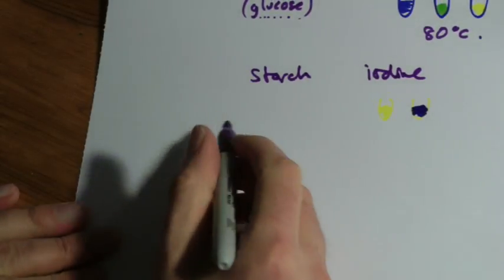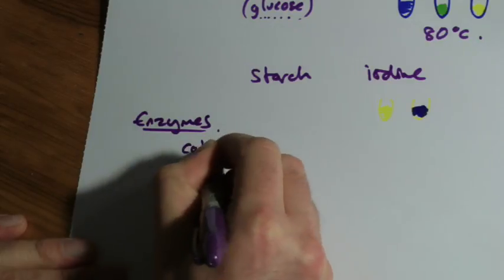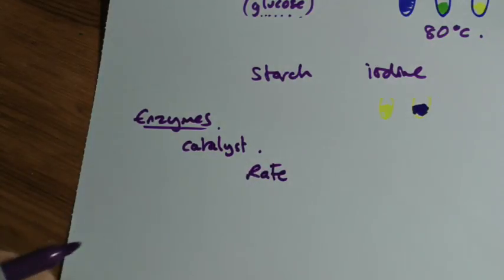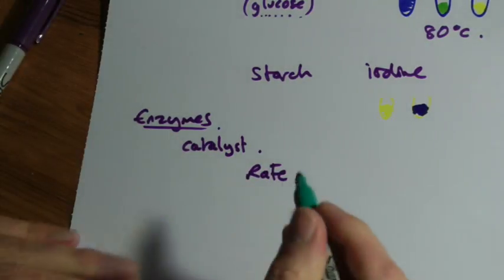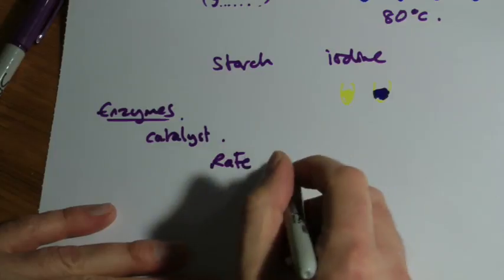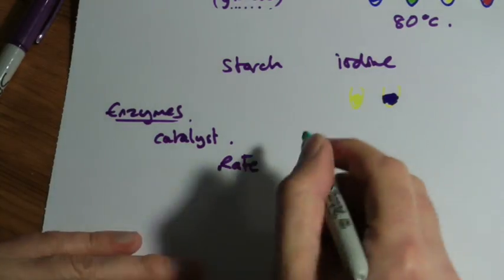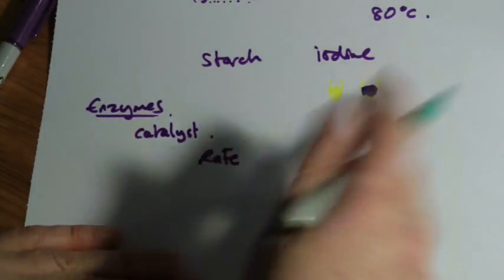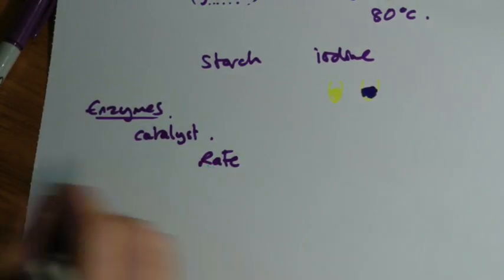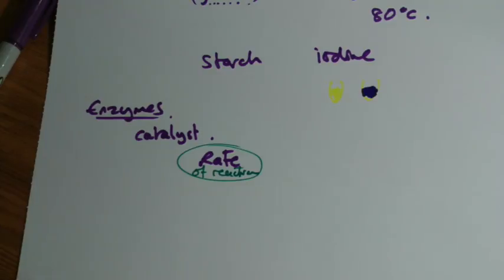On to the trickier bit, which is enzymes. So enzymes are these biological catalysts. Catalyst is something that speeds up the rate of a reaction. Rate is a quite tricky term to get your head around. Rate is how often something happens per unit of time. For example, how many times per second does a reaction happen? And what a catalyst does is it increases the rate of reaction. So there are more reactions every second, or more reactions per minute, or more reactions per hour. That's a useful term to get into your head. The rate of a reaction. Catalyst increases the rate of reaction.